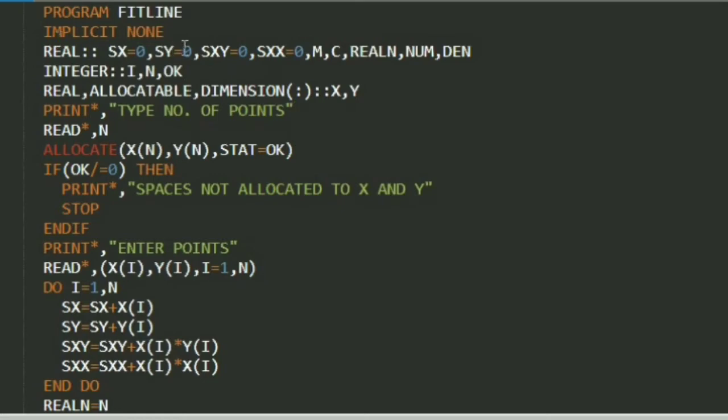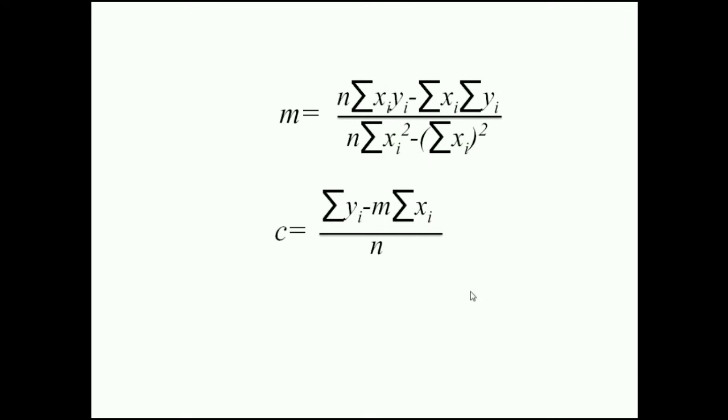So the equation of straight line is y equals mx plus c, where m is slope and c is intercept on y axis. The value of m is given by m equals n into summation xi yi minus summation xi into summation yi, divided by n into summation xi square minus summation xi ka whole square. And value of c is summation yi minus m into summation xi divided by n.